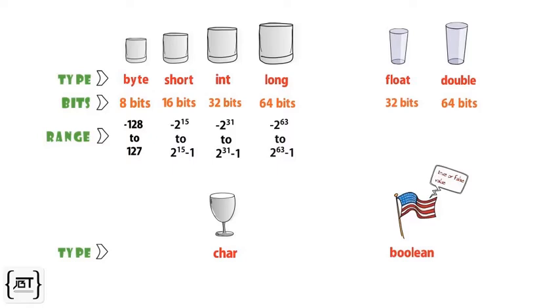Float has a range of about plus minus 10 to the power of 38 and about 7 significant decimal digits.